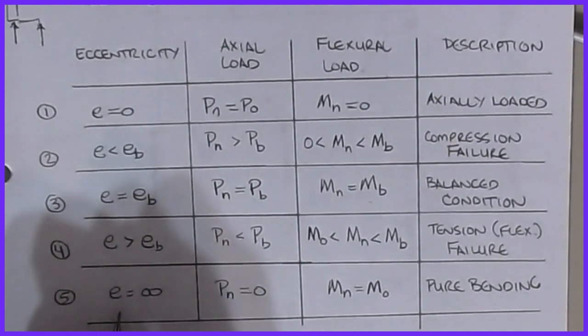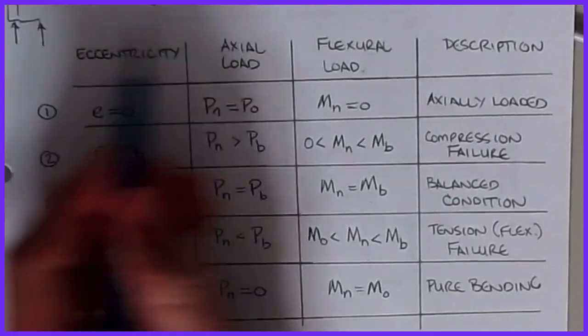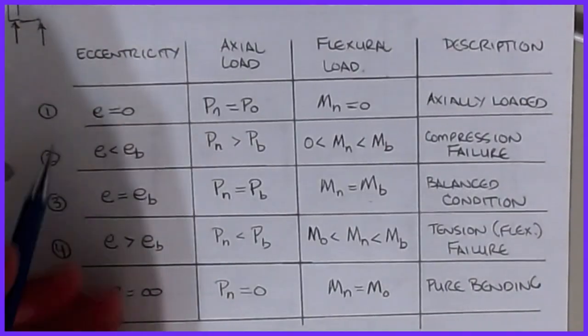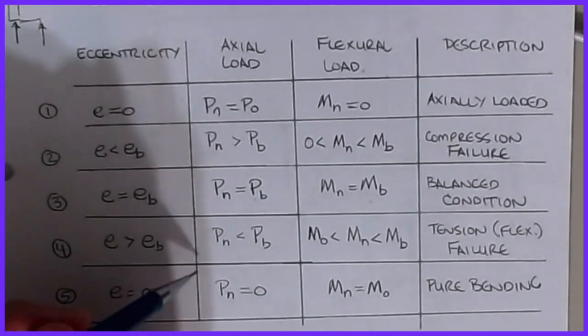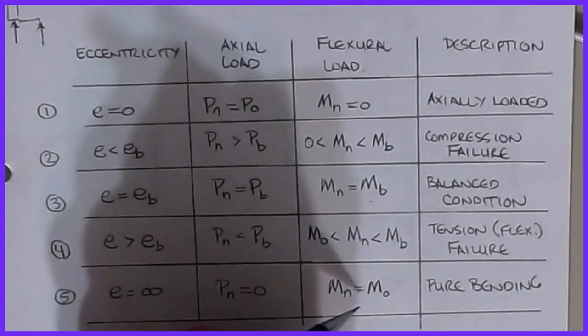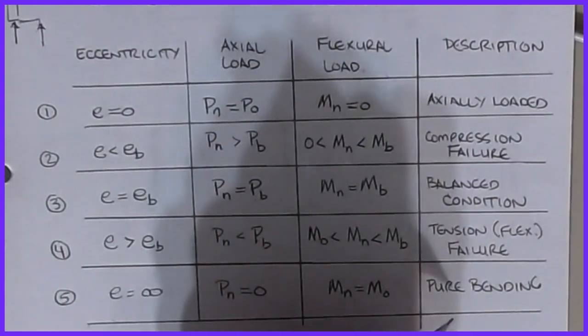The other extreme then is case five where e is infinity. So again this load is moved all the way out to here. It's a pure flexure problem. The axial load has very little influence on this compared to the moment, and so then the Mₙ becomes equal to M₀, and this is the pure bending case.